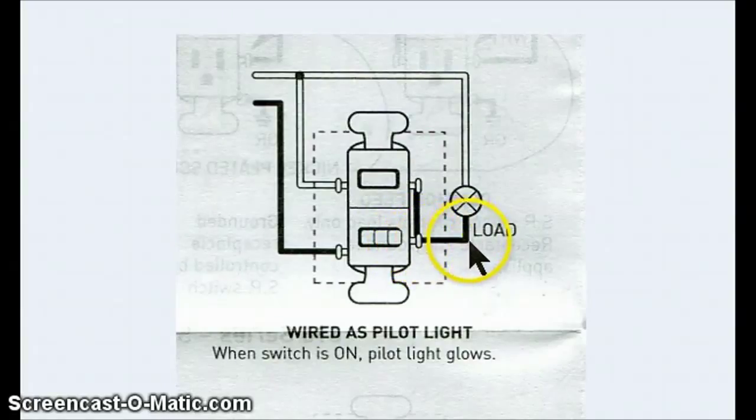You hook the black or the red wire coming from the load, which is your fan, your light, your outlet, whatever, onto this brass screw. The other side of the load already has the neutral hooked onto it. This screw will receive nothing. You can just close it down and leave it closed.